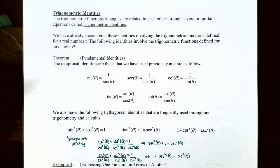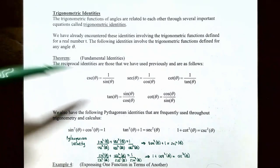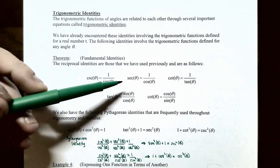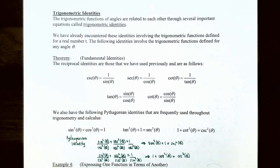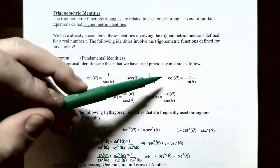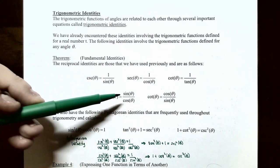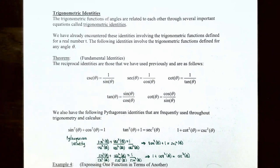The theorem of fundamental identities — the reciprocal identities are those we've already previously studied. The cosecant function is the reciprocal of the sine function, so cosecant of theta equals 1 divided by sine of theta. Secant and cosine are reciprocals, so secant of theta equals 1 divided by cosine of theta. Cotangent and tangent are reciprocals, so cotangent of theta equals 1 divided by tangent of theta. Tangent of theta is the ratio of sine of theta divided by cosine of theta, and cotangent of theta is cosine of theta divided by sine of theta.